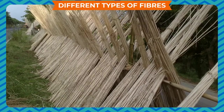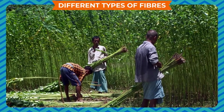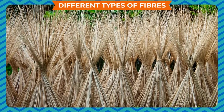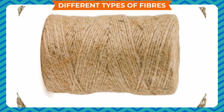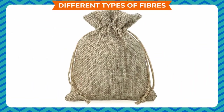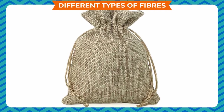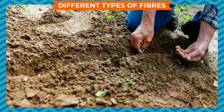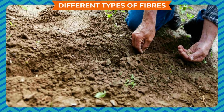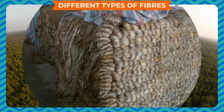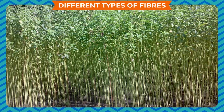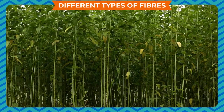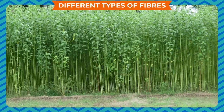Jute is a long, soft, shiny plant fiber that can be twisted into coarse and strong threads. It is produced from the stem of the jute plant and is one of the cheapest natural fibers. Some of its useful properties are its holding ability, durability, strength, and biodegradability — it is especially useful for making strong packaging material. Jute grows best in warm, humid climate with plenty of rainfall and in alluvial soil, as in the Sundarban delta in India and Bangladesh. Jute is cultivated in the rainy season; sowing is done between February and May depending on the species, and the crop becomes ready for harvesting in four to five months.